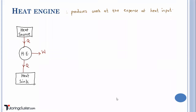Heat sources are heat reservoirs which supply heat to the heat engine. The heat source is at a temperature T1, so the input heat is Q1 — this is the input to the system. Your system is the heat engine. The output is the work W that it produces, and it produces this work by rejecting heat to the surrounding.